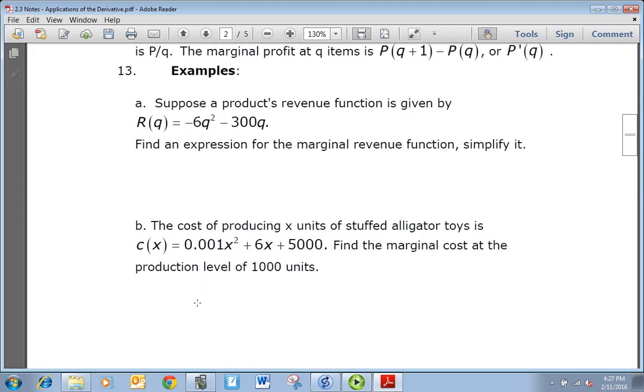So this one says suppose a product's revenue function is given by R(q) = -6q² - 300q. We want to find an expression for the marginal revenue function and simplify it. So here all we're asked to do is find R'(q), which is -12q - 300, and from that function we could find the marginal revenue at any q.